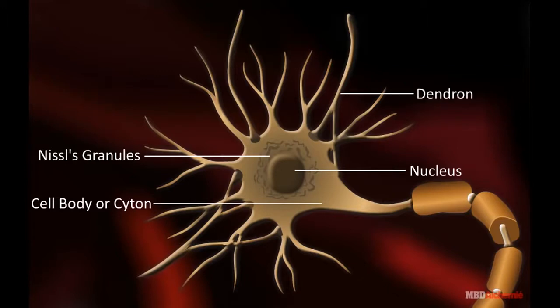Dendron are the branched projections of a neuron that act to conduct the electrical stimulation. Dendrites are terminal branches that arise from dendrons.